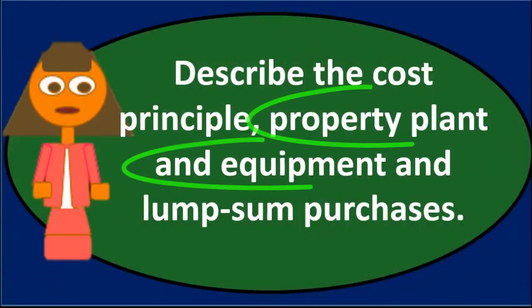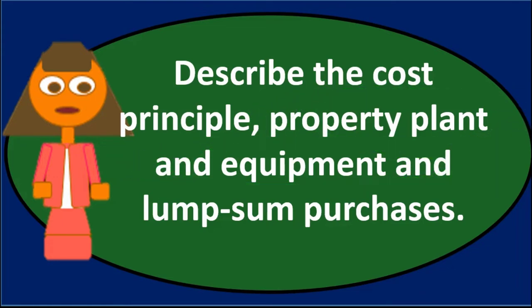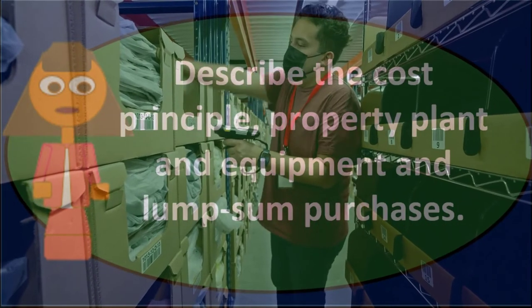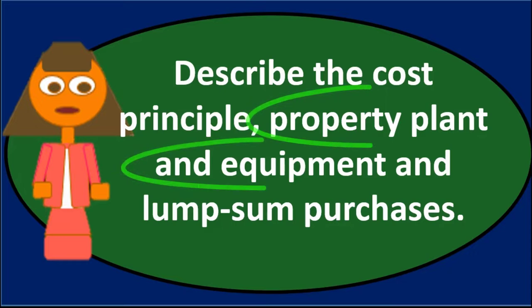Included in the cost is the sticker price of whatever property, plant and equipment we are purchasing, as well as anything needed to get it in place. If we had to pay for shipping to get the equipment here, we'd include the shipping.